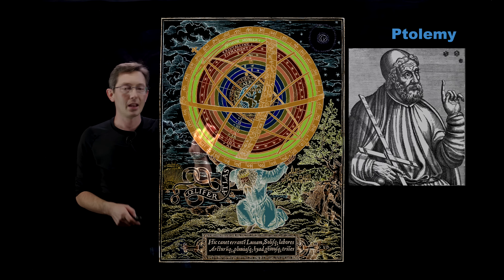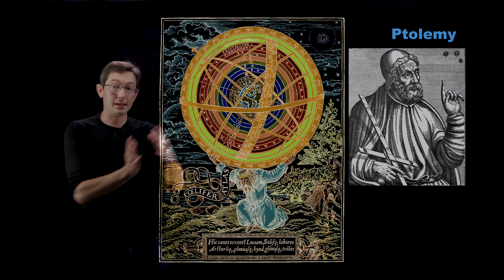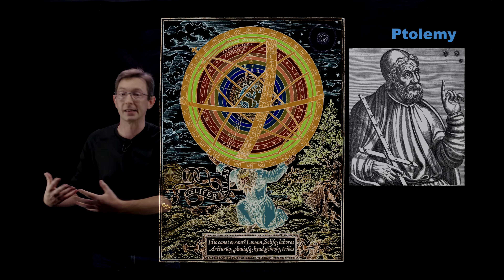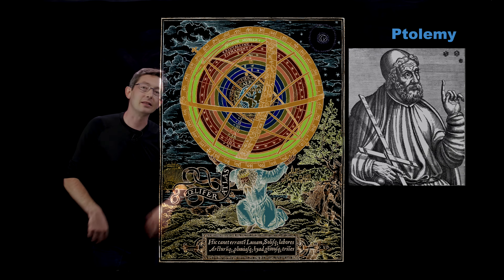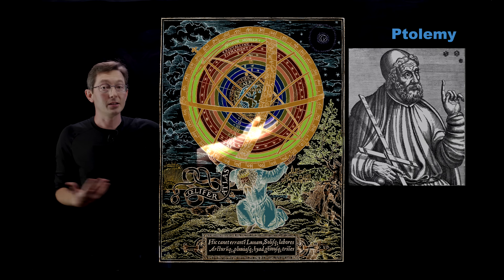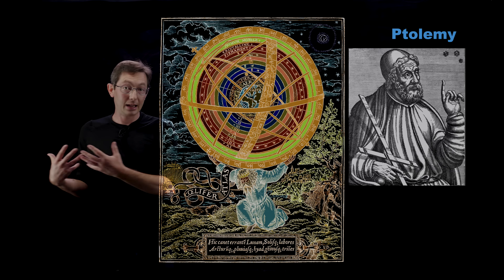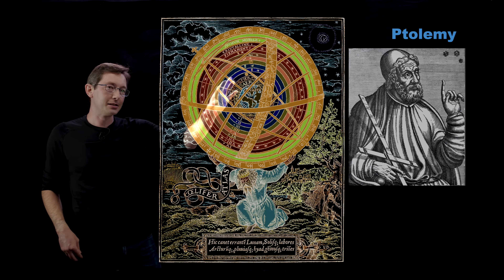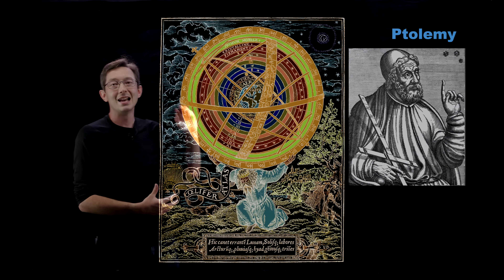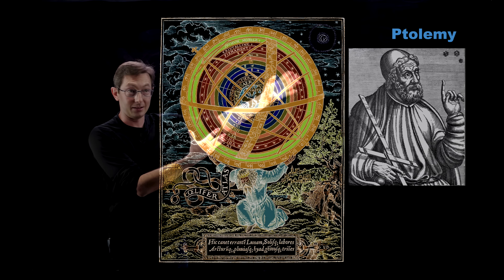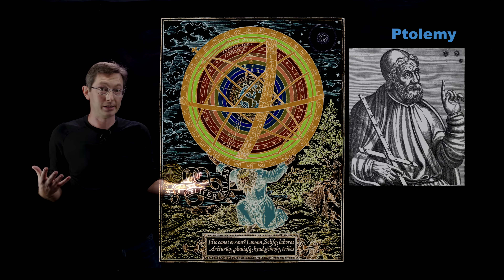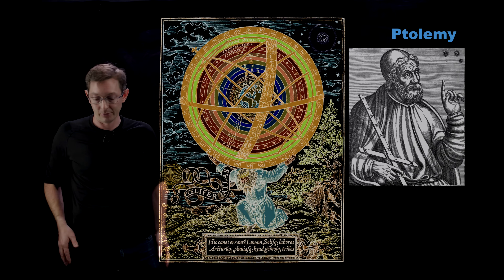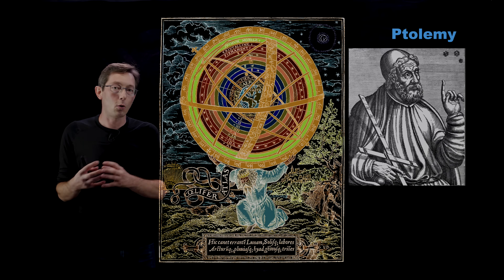Ptolemy's system—in the wrong coordinate system with the wrong physics—was actually more accurate for a long time than Kepler's model that had the right physics with the sun at the center. There were discrepancies: unmeasured planets and forces we couldn't predict that made the actually correct idealized physics model a worse fit than Ptolemy's model. This is a really important point for machine learning engineers modeling dynamical systems: it's easy to overfit. The Ptolemaic model is essentially a Fourier transform of the solar system data, and it was extremely accurate despite being wrong, because there were planets that hadn't been measured.